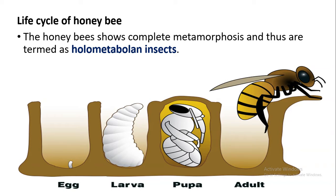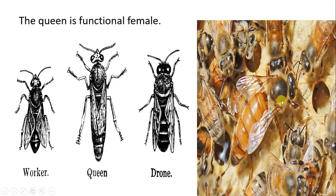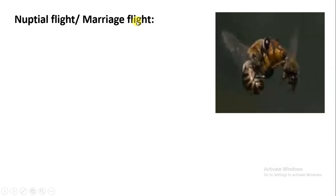Insects that undergo complete metamorphosis are called holometabolous insects. There are three castes: worker bee, queen, and drone. The drone is male, while the worker and queen are female. The worker is an infertile female — unable to lay eggs. The queen is a fertile female, able to lay eggs, and is therefore the functional female. The queen is large in size and easily identified.